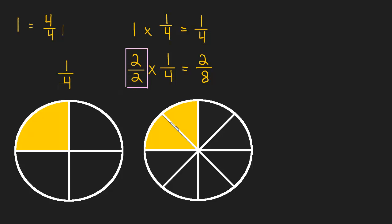Make sure you understand this. This is something that will come up throughout your math career. The fact that you can multiply by a number over itself, and that is the same thing as multiplying by one. Okay, I hope this helps. I'll see you in the next video.